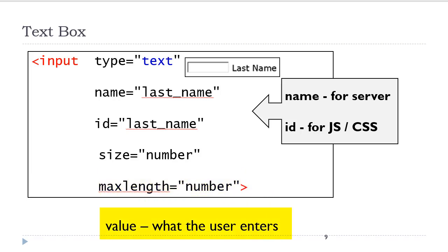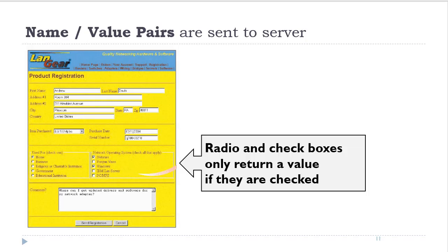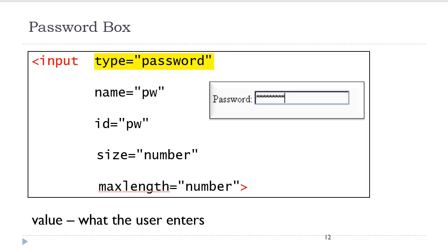The user will enter a value, and that value will be paired with the name attribute and sent to the server for processing. Every form element has a unique name attribute, so the name attribute and the value entered by the user would be paired together and sent to the server. You will commonly hear this referred to as name-value pairs. Radio and check boxes will only return a value if they are checked. If they are not checked, nothing will be sent to the server. Text boxes will send a value of nothing or emptiness to the server, even if the user does not enter data in them.